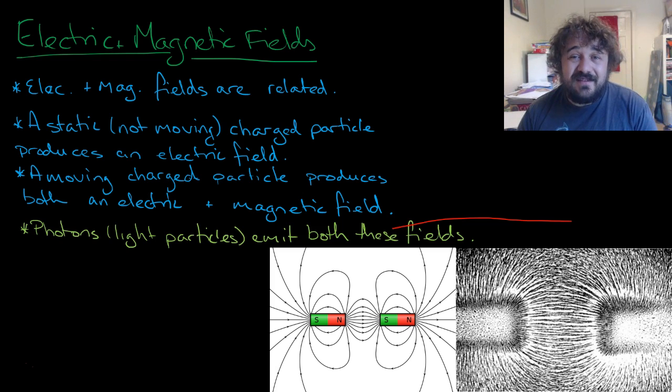Photons, which are light particles, also emit both magnetic and electric fields. You can bend photons using magnets, which is an interesting thing to do to your television. If you put a magnet near an old cathode ray television, it will distort the picture as it drags all the photons towards the magnet.